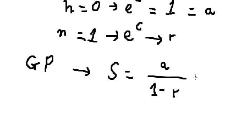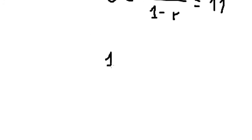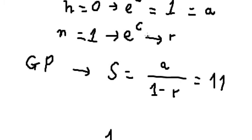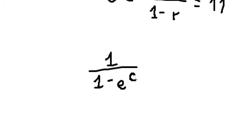So we have the sum equals 11. We have a equals one, and R equals e to the power of C. This equals 11. Now we just find the value of C.